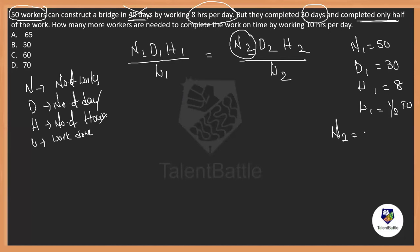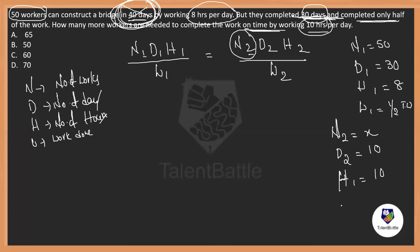For the second case, let the number of people be x. They need to finish the work on time — total 40 days, 30 days already done, so 10 days are left. They are going to work 10 hours a day instead of 8. The remaining work is also half of the total work.